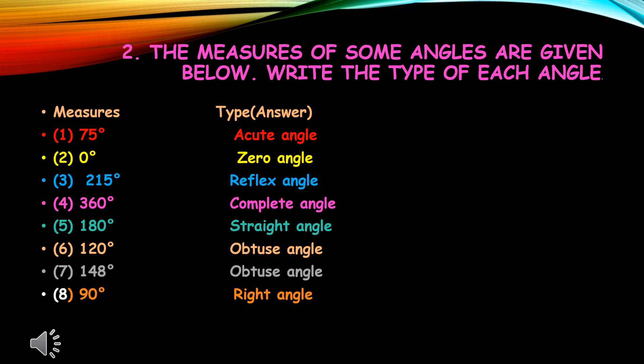Let's see the second question of Practice Set 2. The measures of some angles are given below; write the type of each angle. First one: 75 degrees. An angle between 0 degrees and 90 degrees is called an acute angle, so our answer is acute angle. Zero degrees means zero angle.